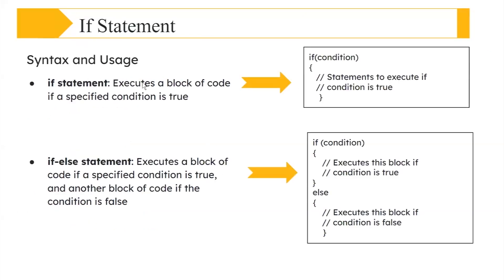So, what does the if statement do? It executes a block of code when the given condition is true. If the given condition is false, it will not execute — that falls under the else block. For example, if I give a value of 10 and b as 20, then 10 is greater than 20 is false, so it goes to the else block.